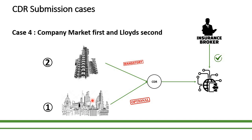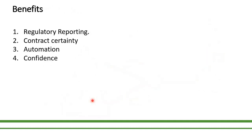So those are the four possible scenarios. Now let's quickly talk about some of the key benefits. Regulatory reporting: early notification of signed lines provides greater visibility of premium and exposure, which helps produce accurate regulatory reporting to various regulators across the world. Greater contract certainty can be achieved as a carrier is able to access the data early in the process. Capturing data early gives a greater opportunity to improve downstream processing by automating it, and confidence in the data will increase.